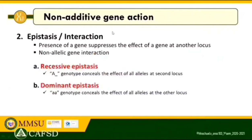The second type of non-additive gene action is epistasis, also called interaction. When we say epistasis, the presence of a gene suppresses the effect of a gene at another locus. This is otherwise called non-allelic gene interaction — non-allelic because it is an interaction between alleles at different loci, unlike dominance where alleles interact at the same locus. Epistasis is of two types: recessive epistasis and dominant epistasis.